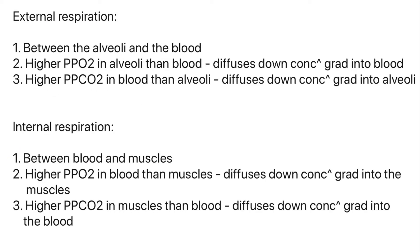We need to briefly look at both external and internal respiration — these are straightforward marks to pick up in exam questions. External respiration occurs between the alveoli and the blood. There's a higher partial pressure of oxygen in the alveoli than in the blood after inspiration, so oxygen diffuses down the concentration gradient into the blood. Conversely, there's a higher partial pressure of carbon dioxide in the blood than the alveoli, so it diffuses down the concentration gradient into the alveoli.